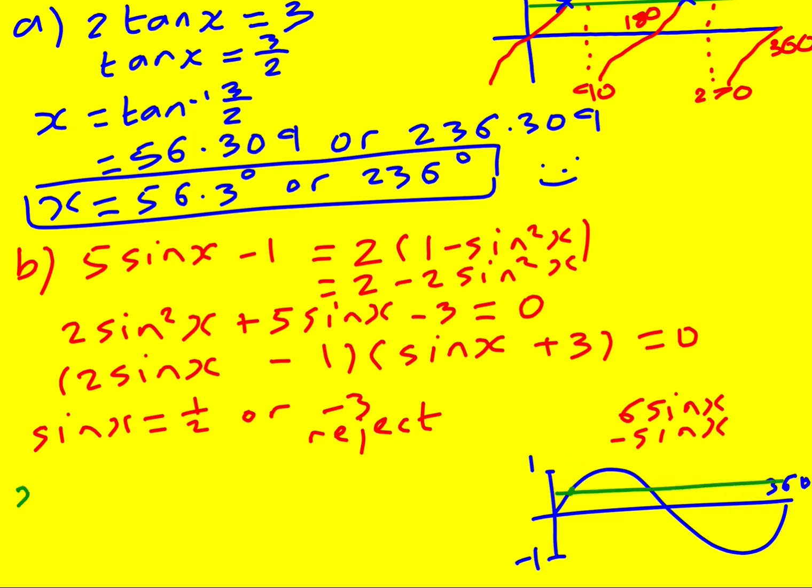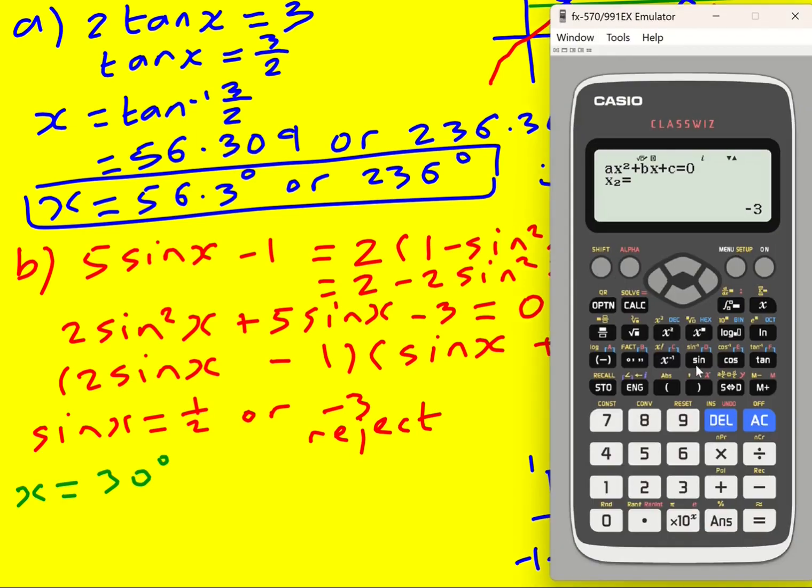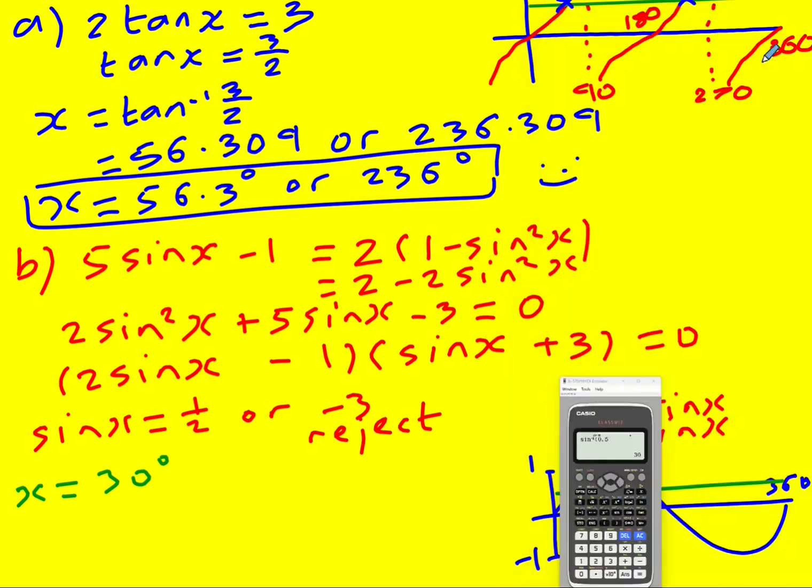And I can do inverse sine. If you do that, you're going to get 30 degrees. Actually, this is an exact value that's worth just knowing - that sine 30 is a half. Otherwise we do inverse sine of 0.5: 30. Or this one here, because of the symmetry of the curve, this distance is the same as this distance, and this point here is 180. So it's going to be 180 minus 30 to get the other value, which gives 150 degrees. A couple of nice trig questions, well done.